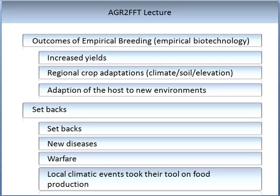Empirical breeding has been able to increase yields. It has been able to concentrate on regional crop adaptations — that is, a characteristic has been selected for that climate, that soil, and that elevation. There is also an adaptation of hosts to new environments. Some of the setbacks in this kind of breeding include new diseases, warfare, and local climatic events, which took their toll on food production.